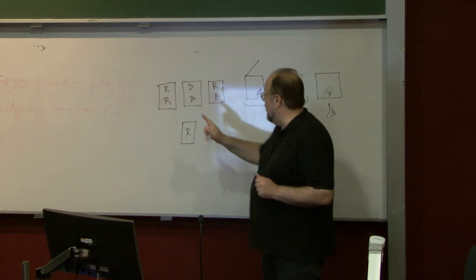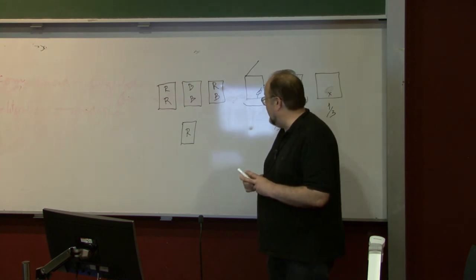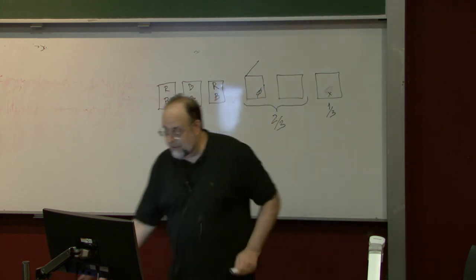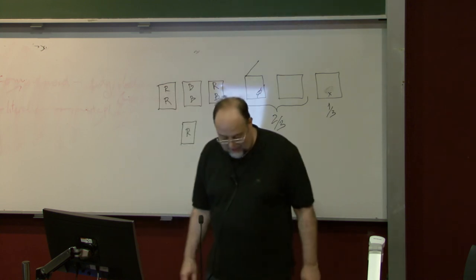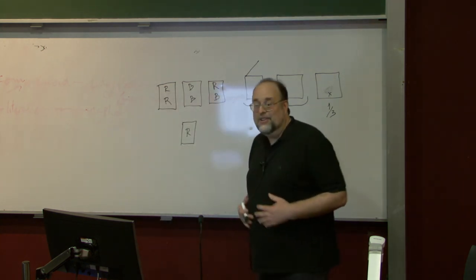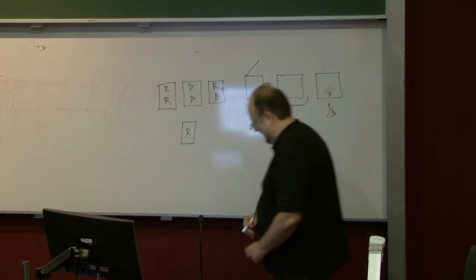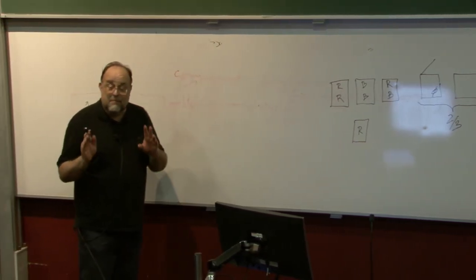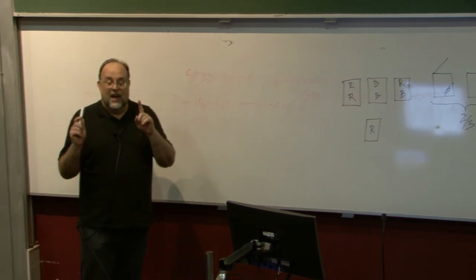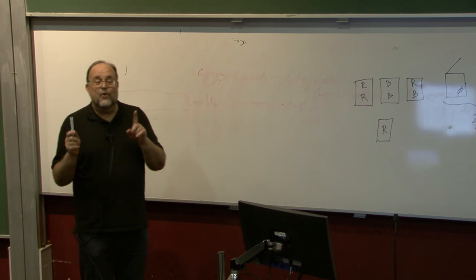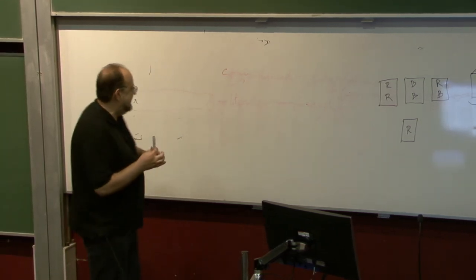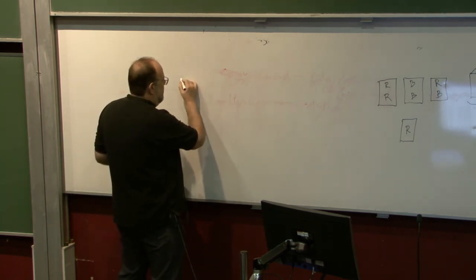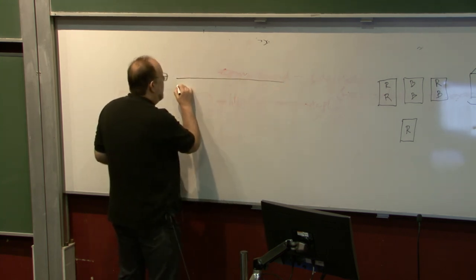No. Why is it not true? Because you also pick a random side. The event actually has the following possibilities: you could have picked the red-red card on one side, the red-red card on the other side, or the red side of the red-blue card. So there are actually three possibilities, not two. There are twice as many ways to pick red from the red-red card as from the red-blue card. So the probability that the other side is also red is two-thirds.